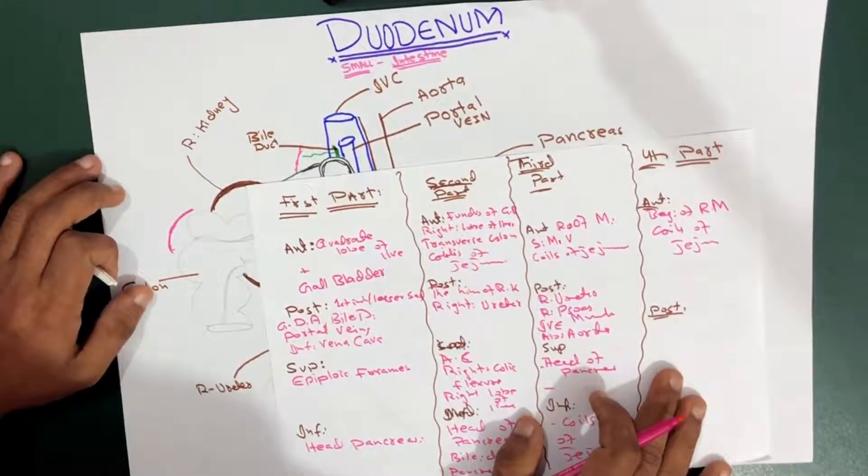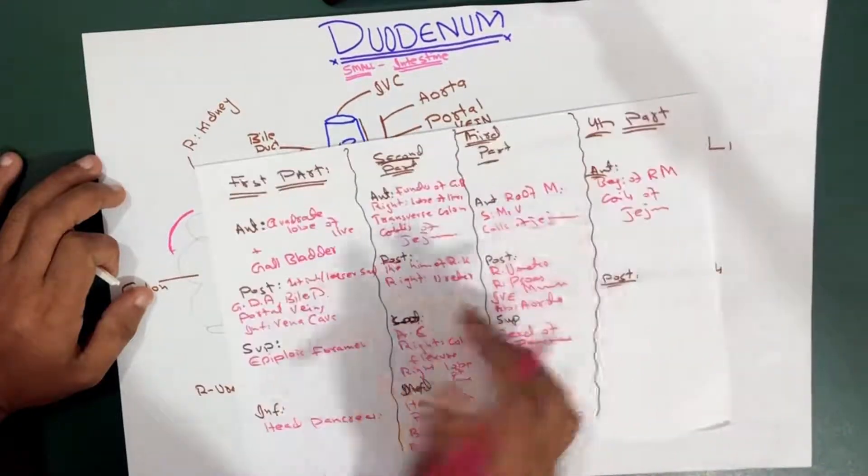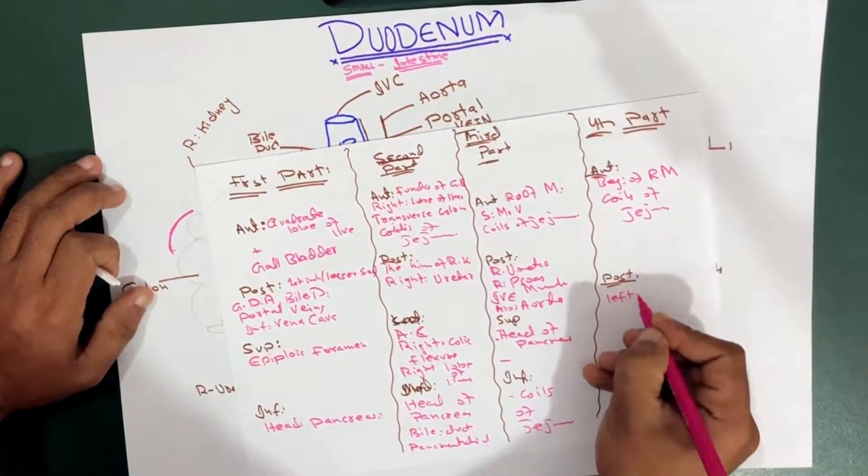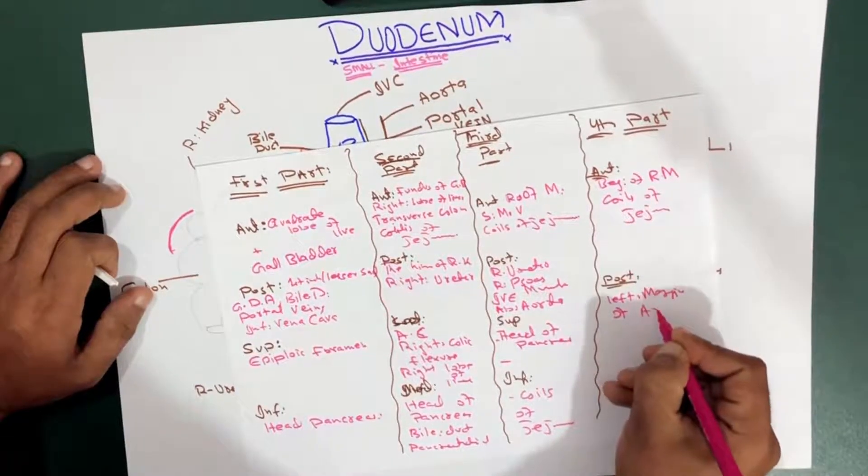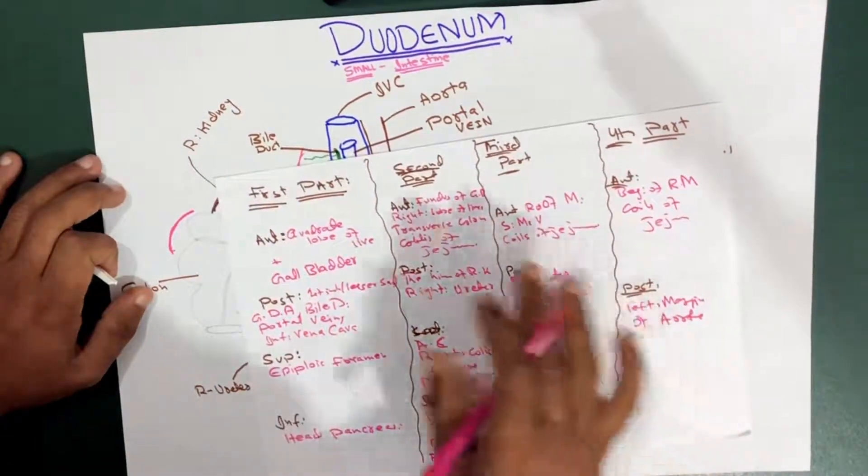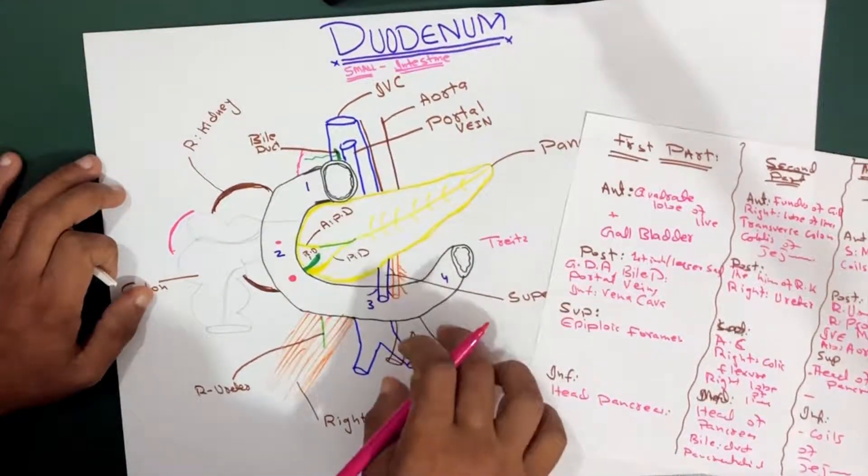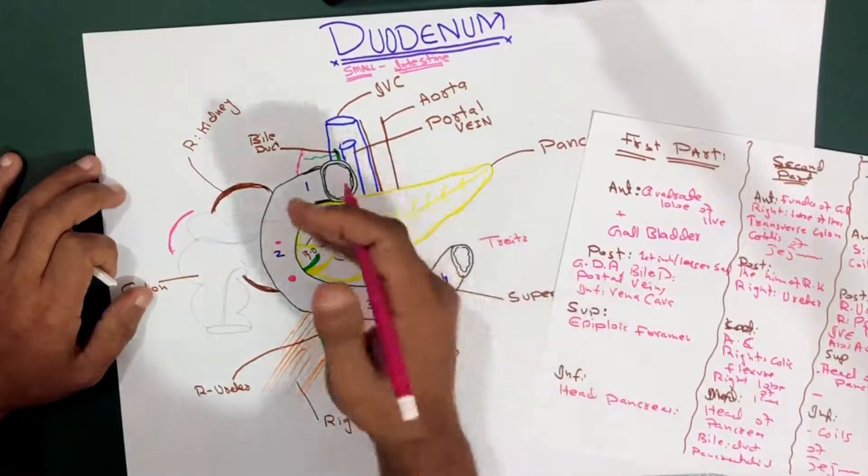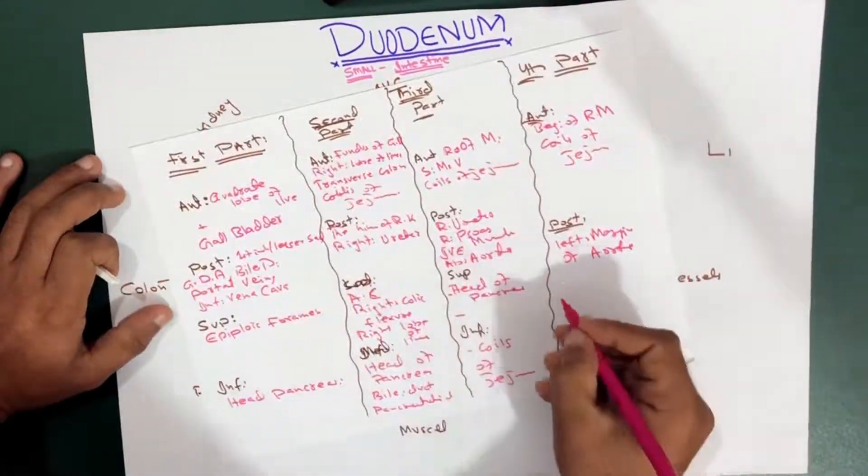And if you talk about the posterior side, we have got the left margin of the aorta, and on the medial border we have got the left psoas muscle.